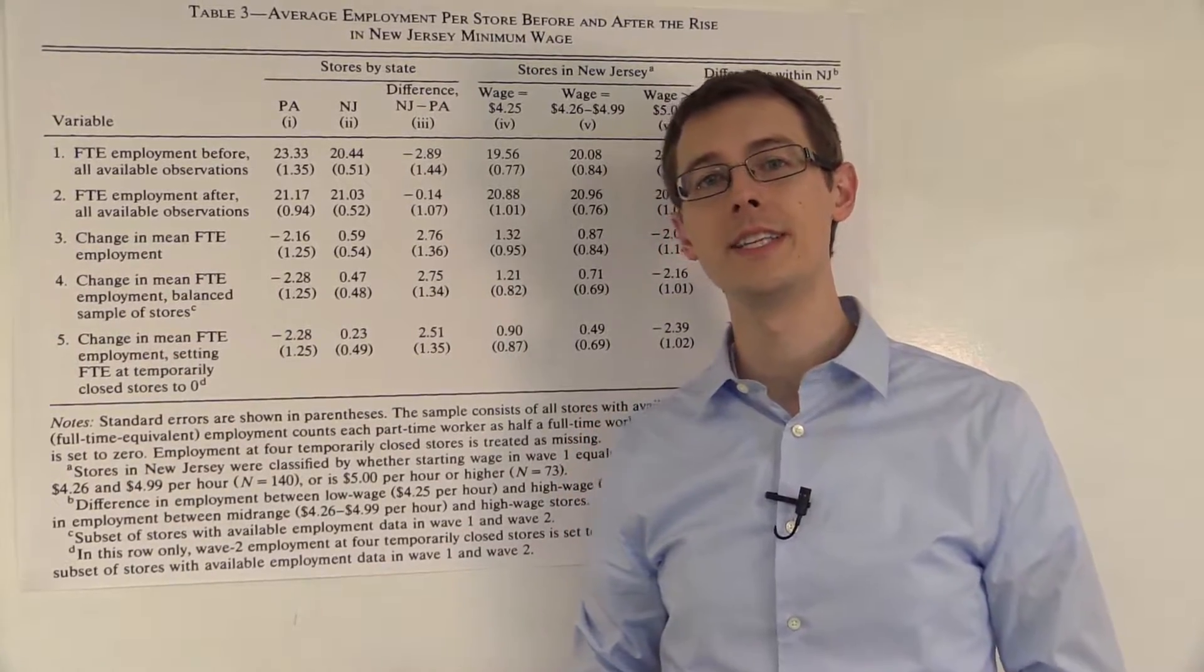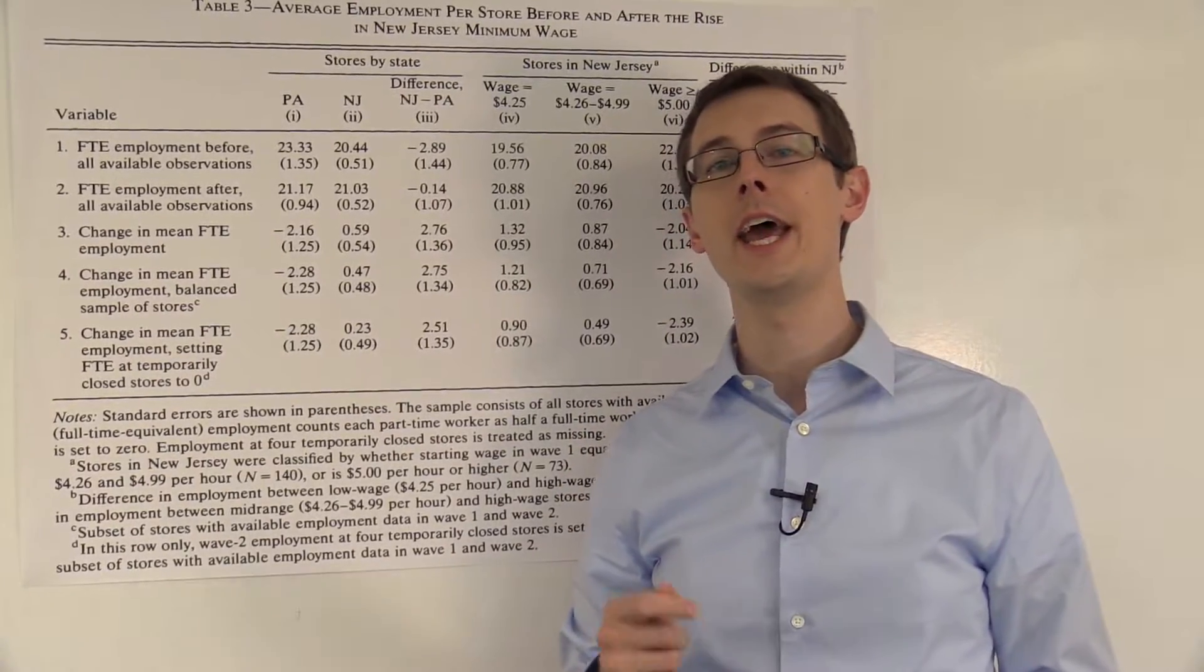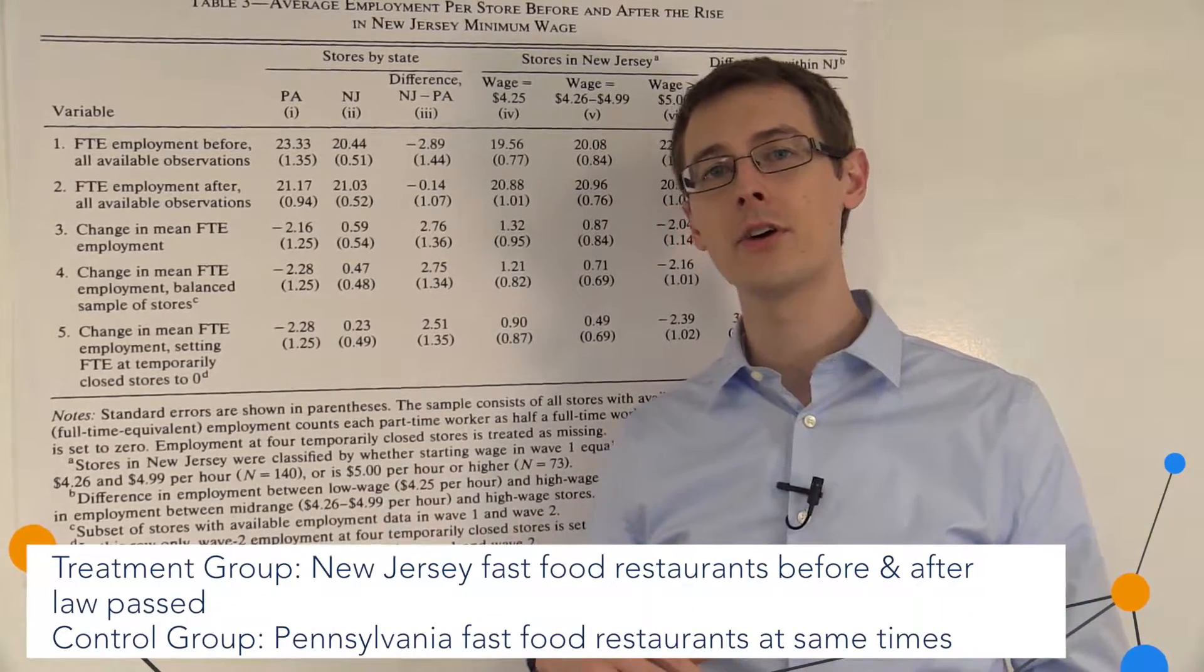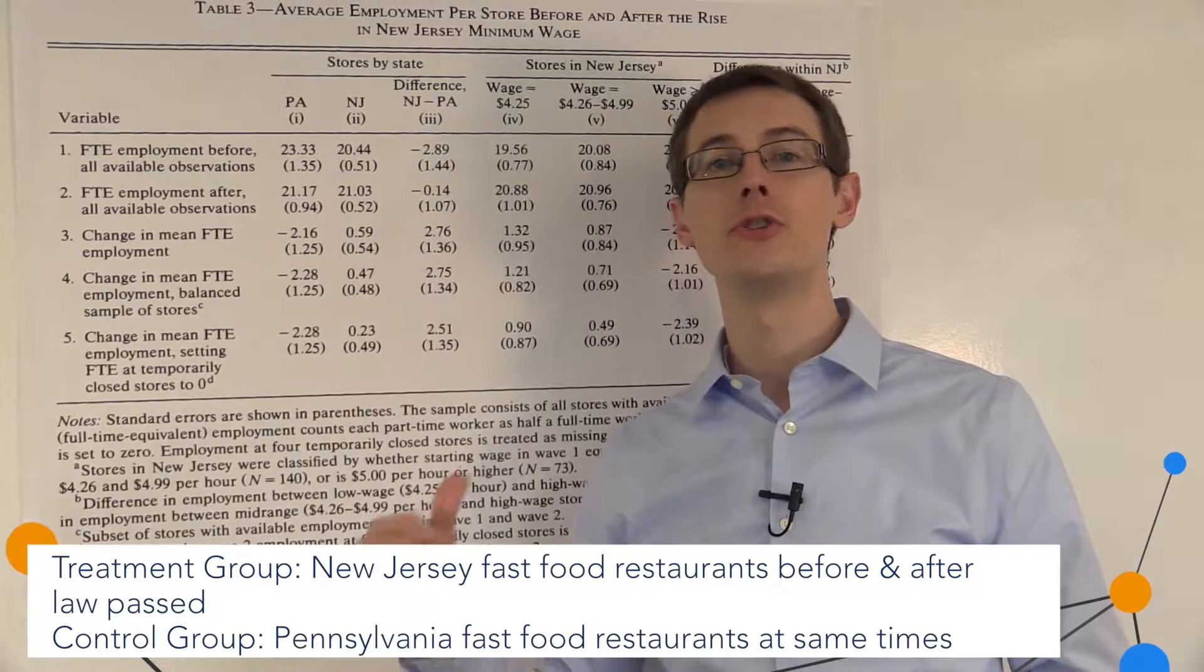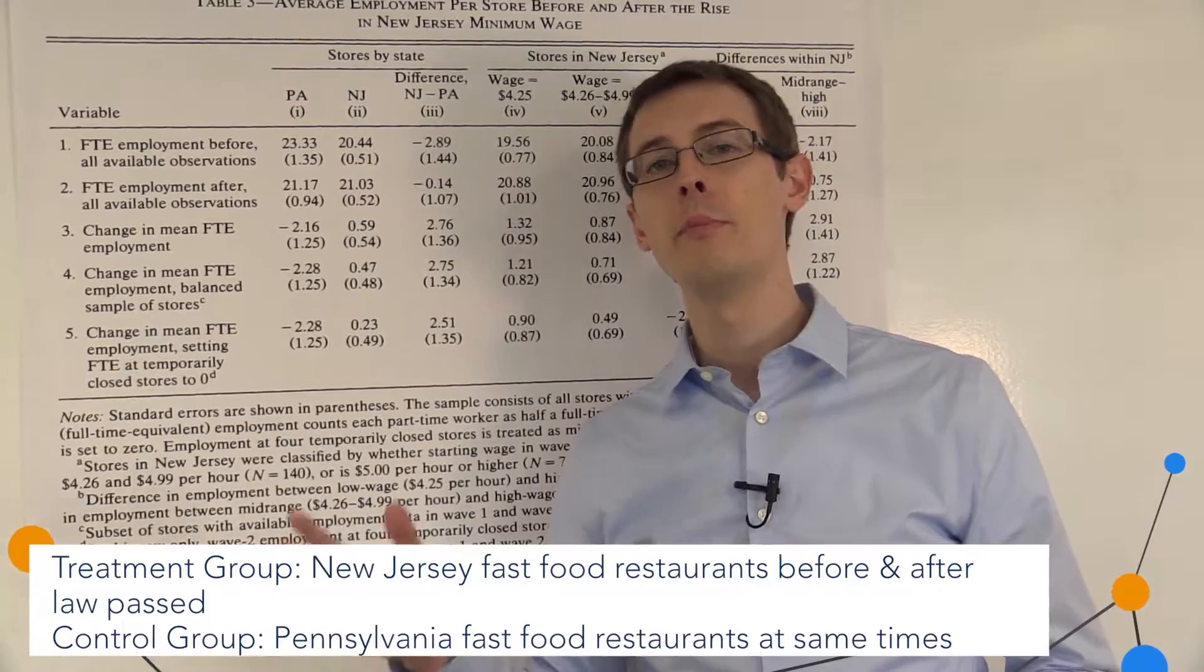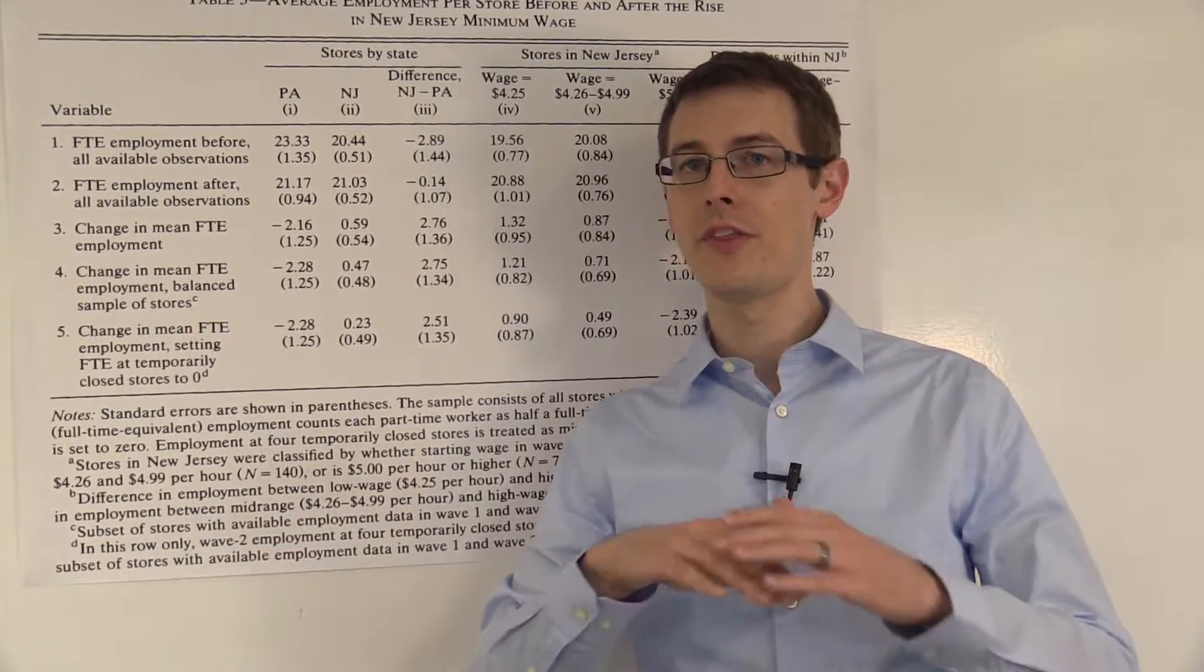So what Card and Krueger did is they also surveyed stores in neighboring Pennsylvania. They surveyed fast food restaurants there before and after the minimum wage law change in New Jersey. So in Pennsylvania, the minimum wage was also $4.25 an hour, but it was not increased. So there, the stores did not get treated in either time period.